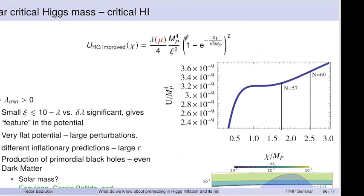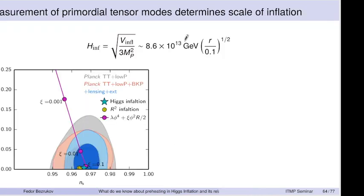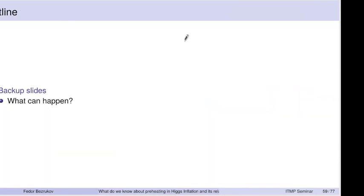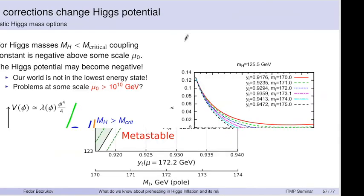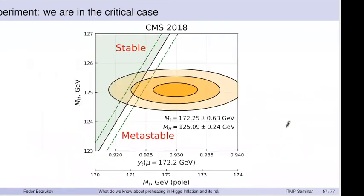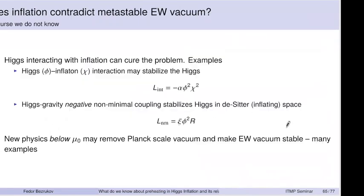You can arrange small λ because λ runs with energy — you can arrange λ to be very small at inflation, and if you tune it to be very small, you can get ξ of order 100.